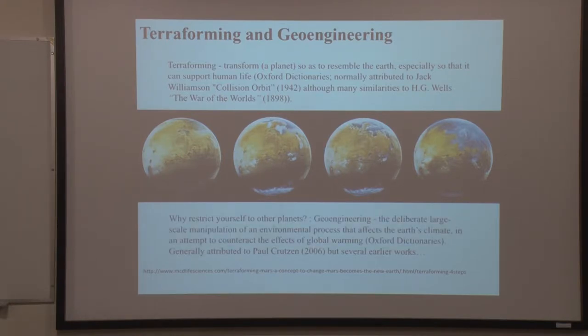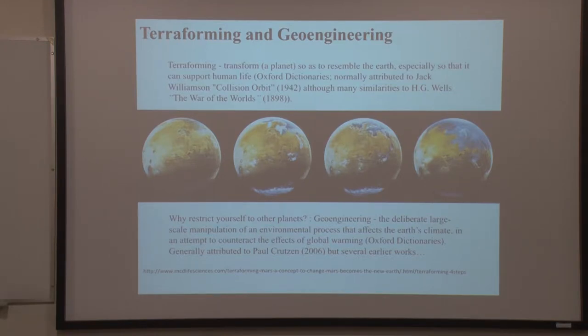Why restrict ourselves to other planets? Maybe there's something about our own planet that we want to change. That's the basis of geoengineering. Looking at the Oxford Dictionary definition, to paraphrase: it's the deliberate, large-scale manipulation of an environmental process — something you want to change about the system. Largely this means global warming, though it is a more general term. Because of where we're at in the modern day, it has taken on the meaning of trying to reduce the temperature we talked about earlier.